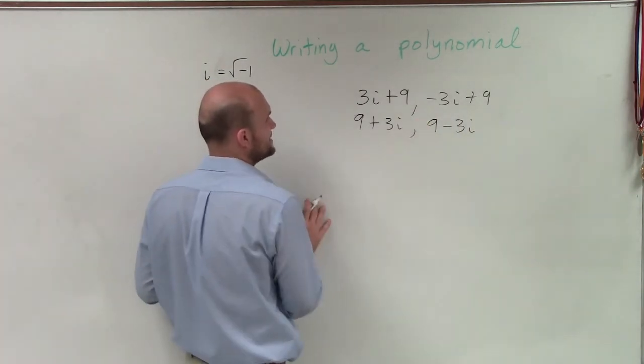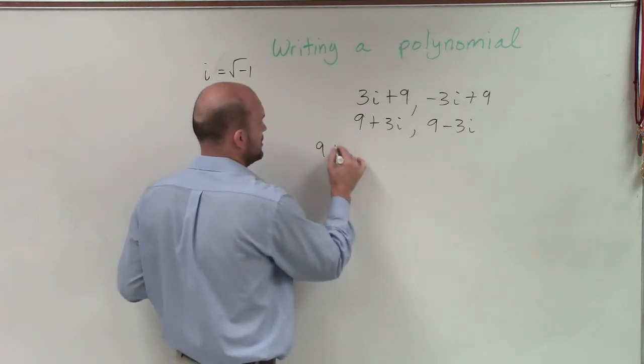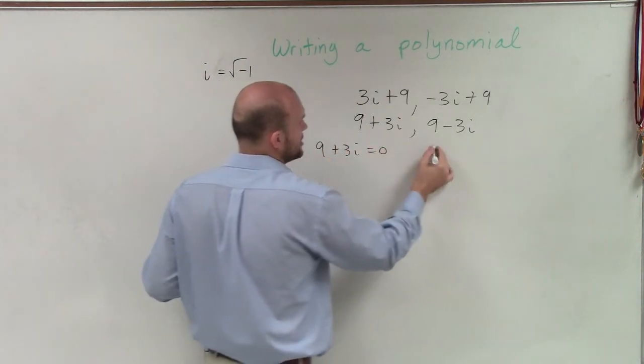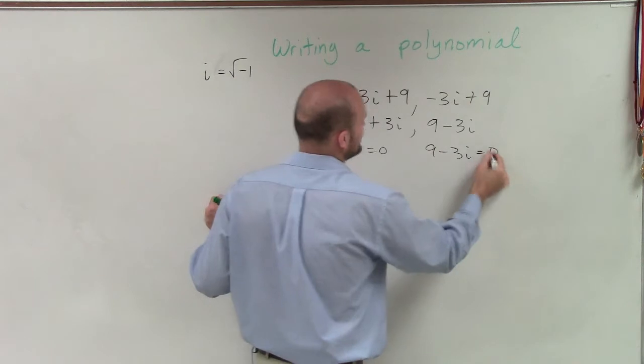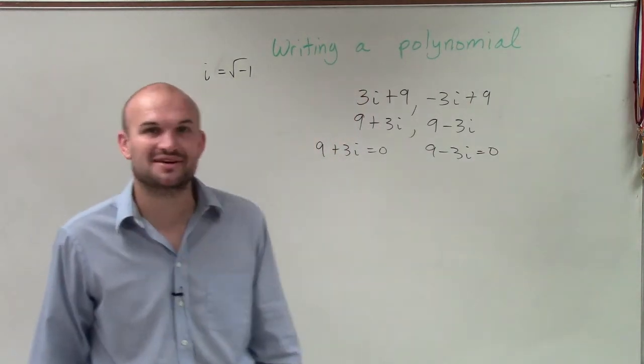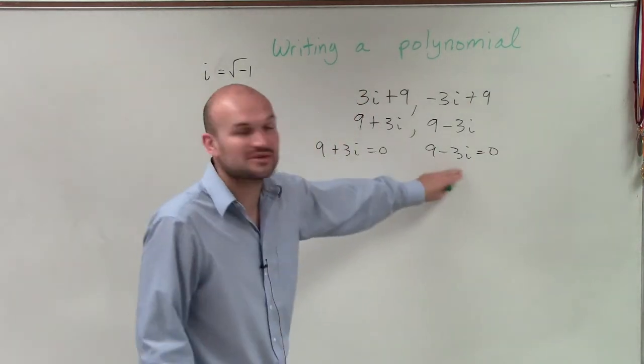so now what we need to do is write these as zeros. And a lot of students will make the mistake and they'll just say, well, 9 plus 3i then equals 0, and 9 minus 3i equals 0, because they don't want to think about them any other way. But these are not your two factors.